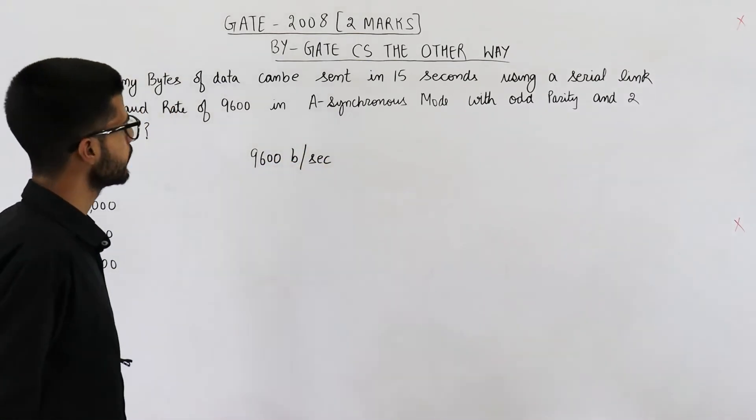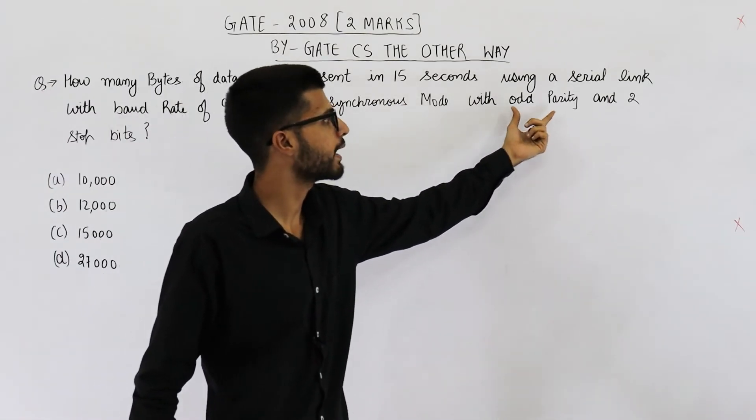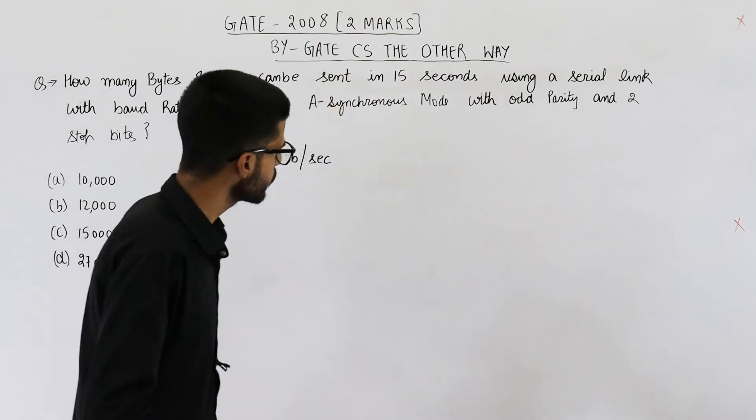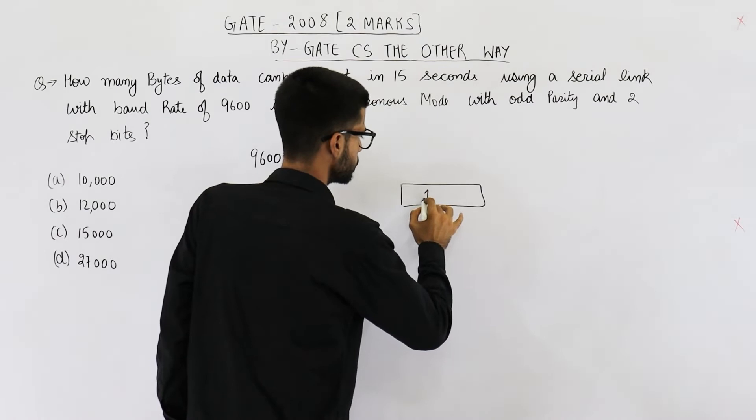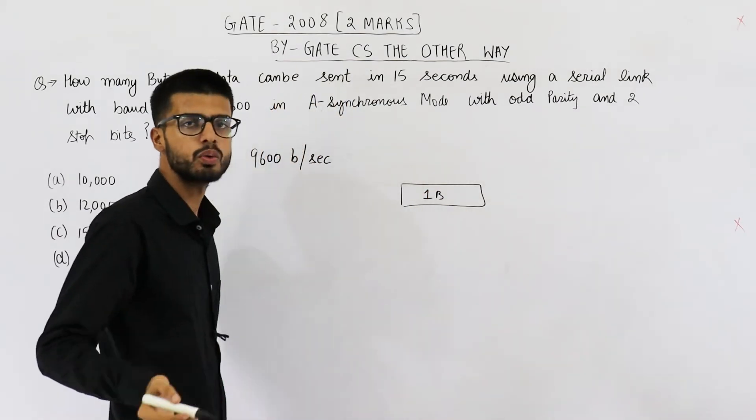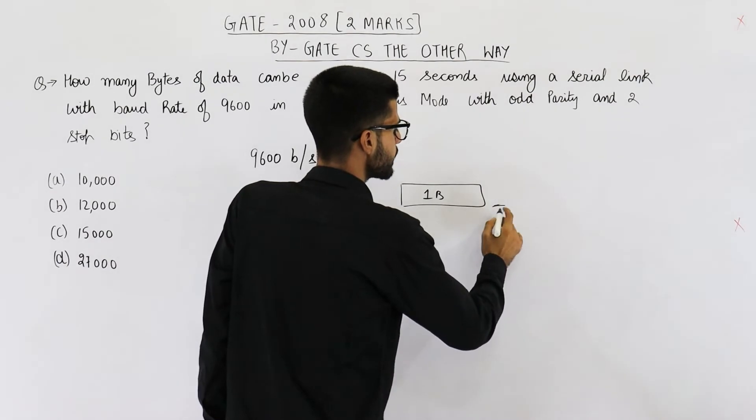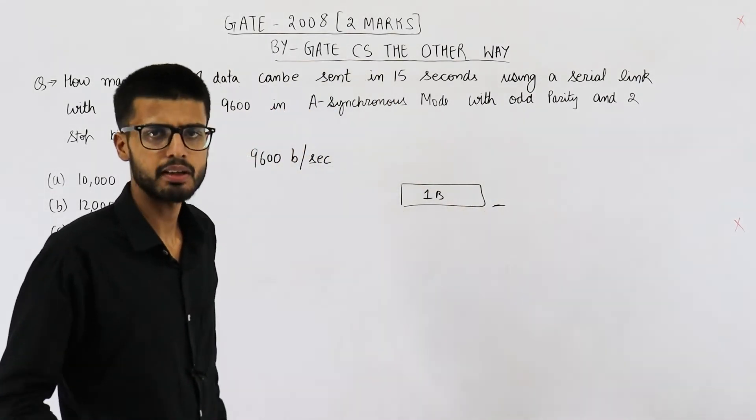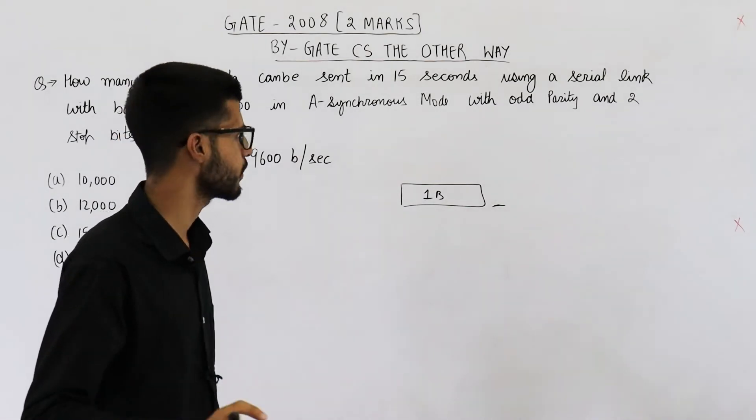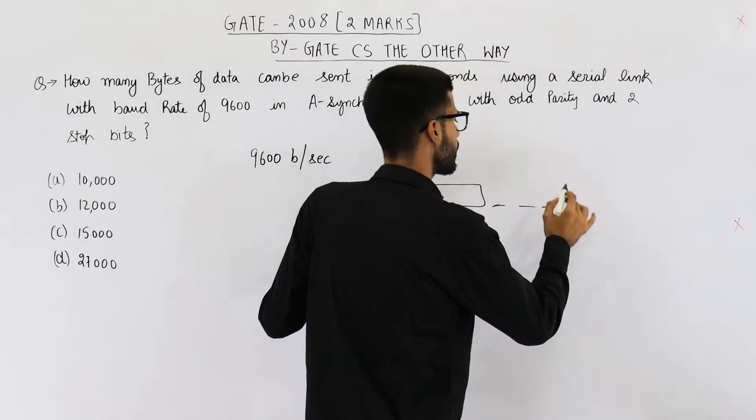Now they are saying we need to send two stop bits and the parity must be odd. So with every byte of data, suppose this is one byte of data, you need to add one parity bit such that overall parity becomes odd. The thing is there will be one bit representing parity, we don't care if the parity is odd or even, and there will be two stop bits.